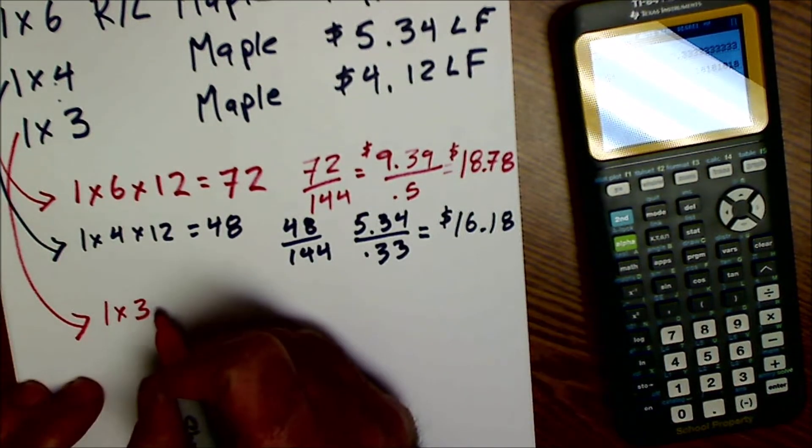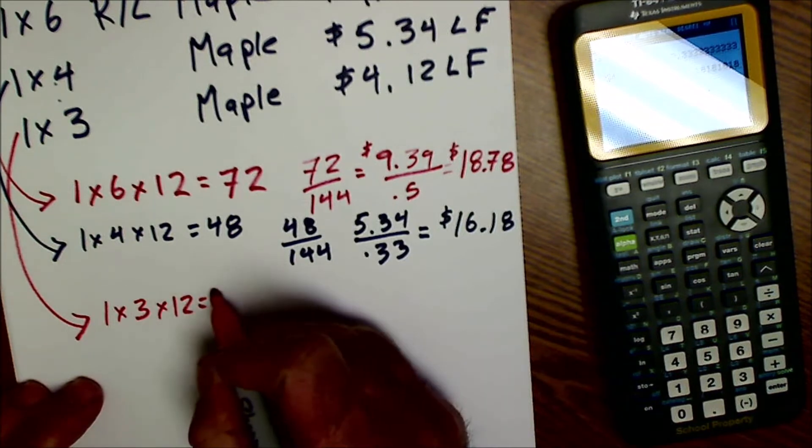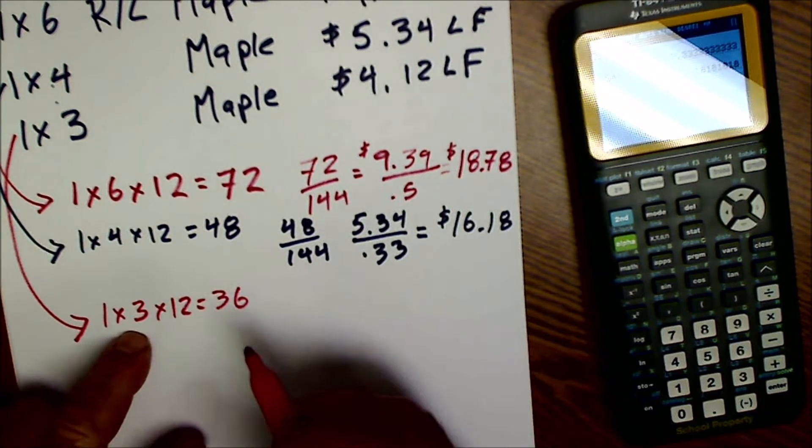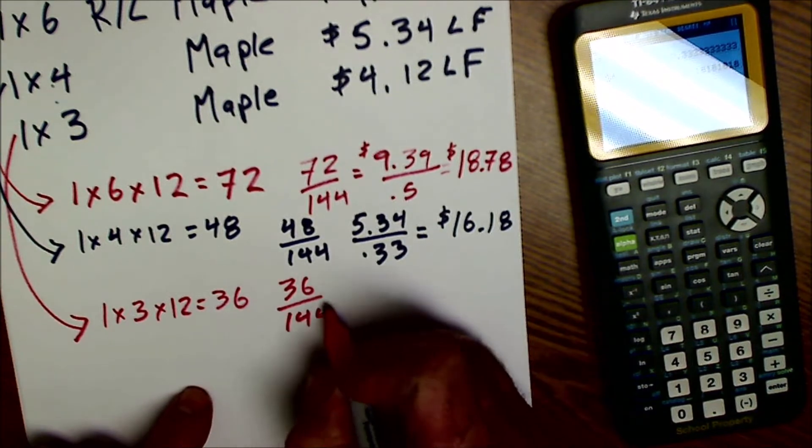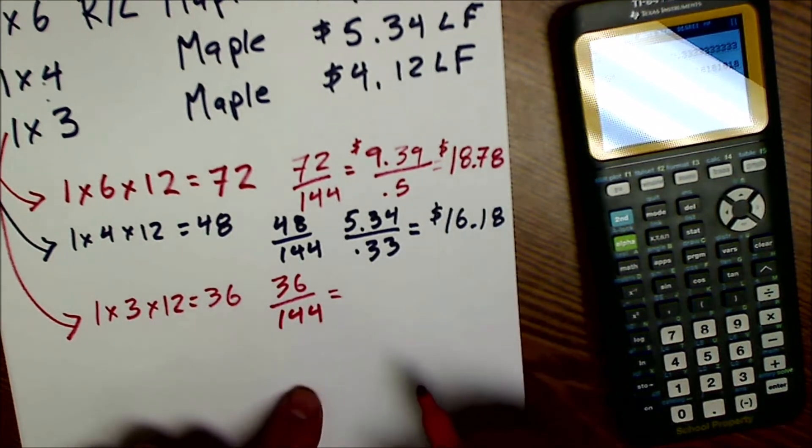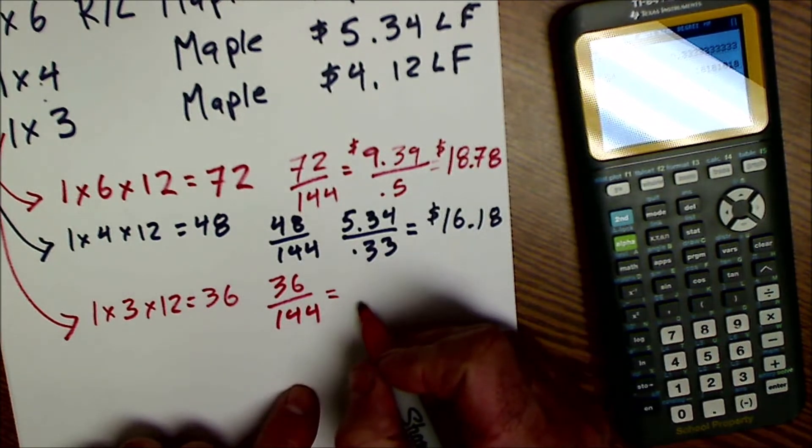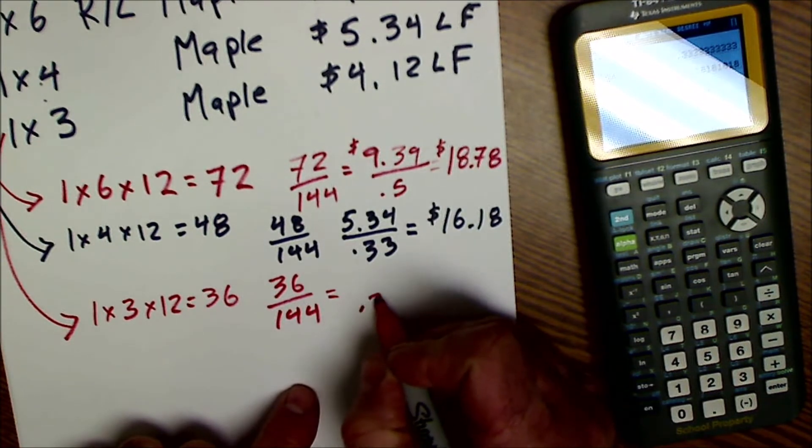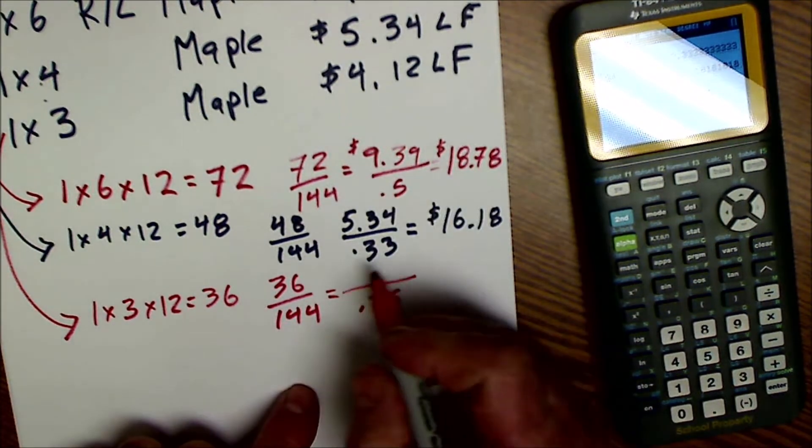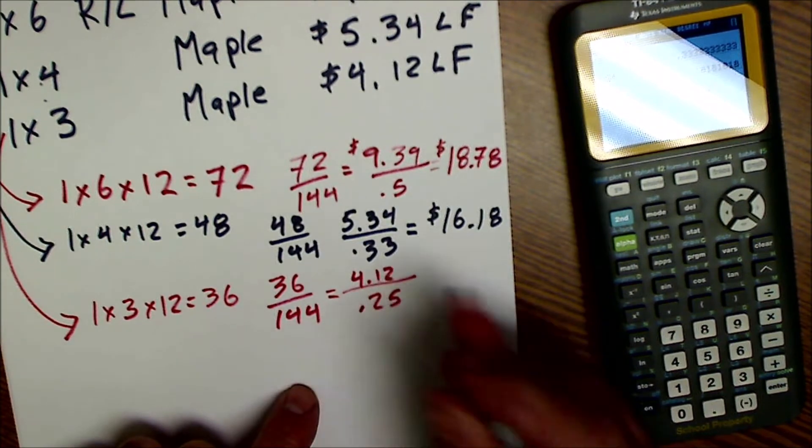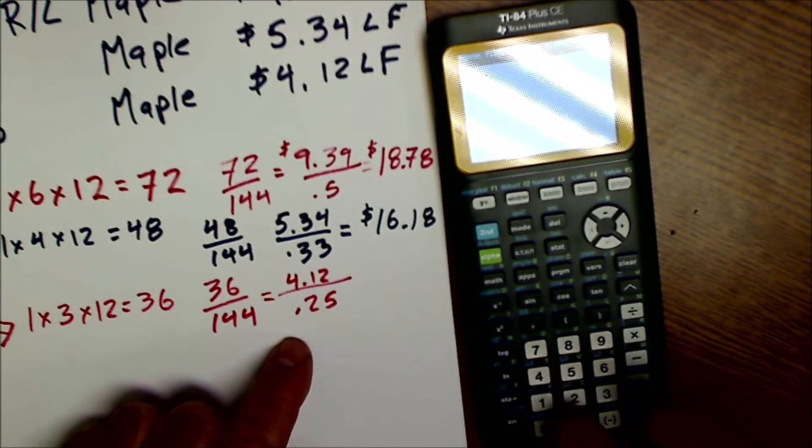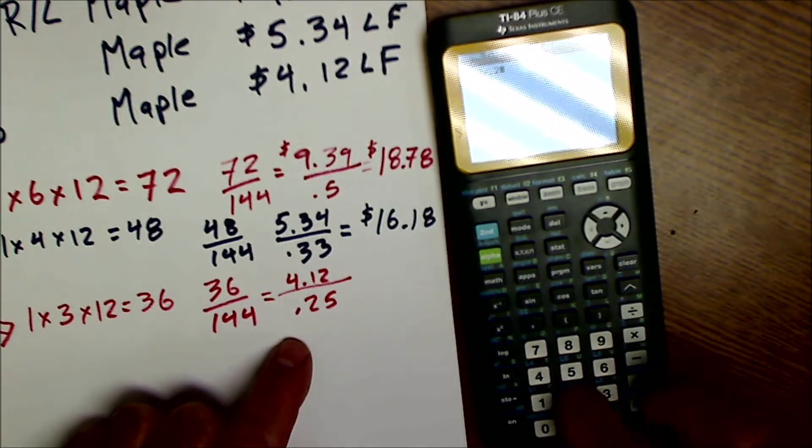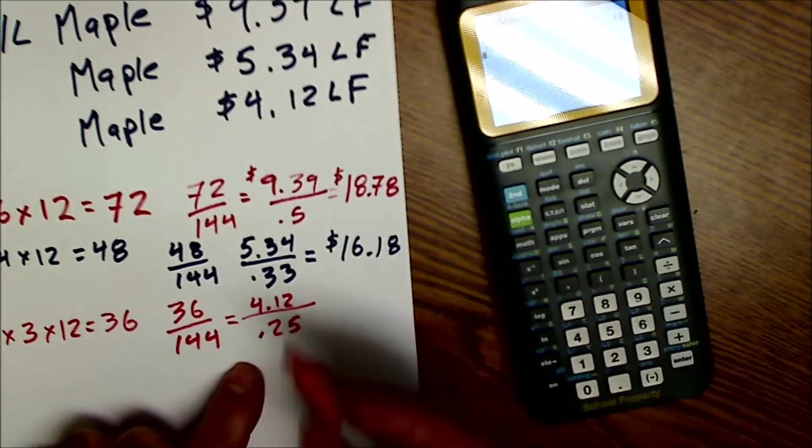So let's do this last one and see if the price per board foot continues to come down. I do 1 by 3 by 12, that's going to be 36. This is a quarter of a foot width. I take that 36 divided by 144 and that's going to be 0.25. And then I'm going to take that price of $4.12 and divide it by that quarter and find the board foot.